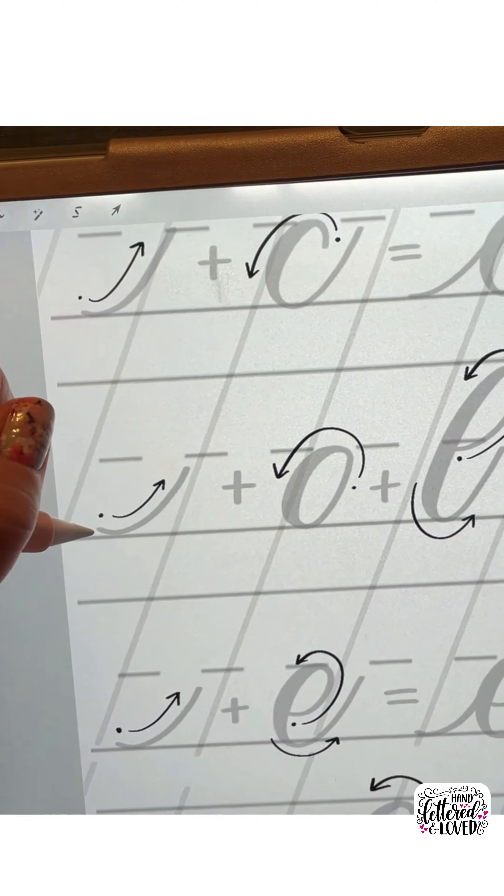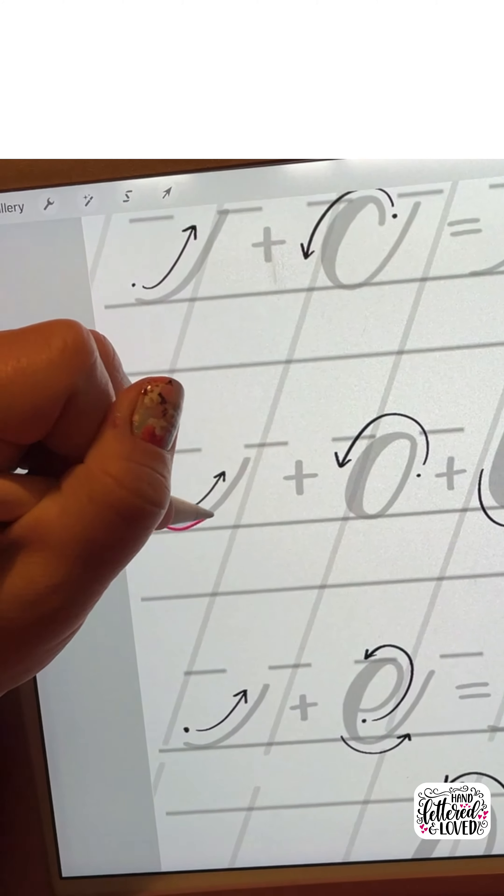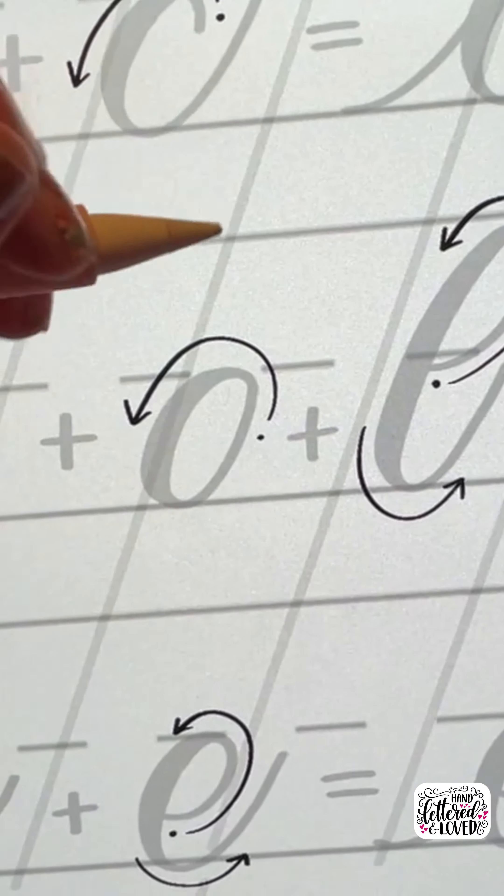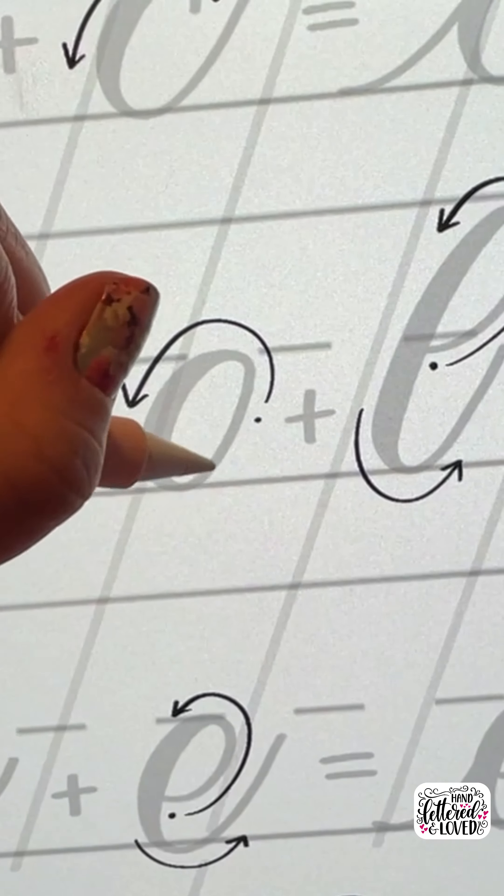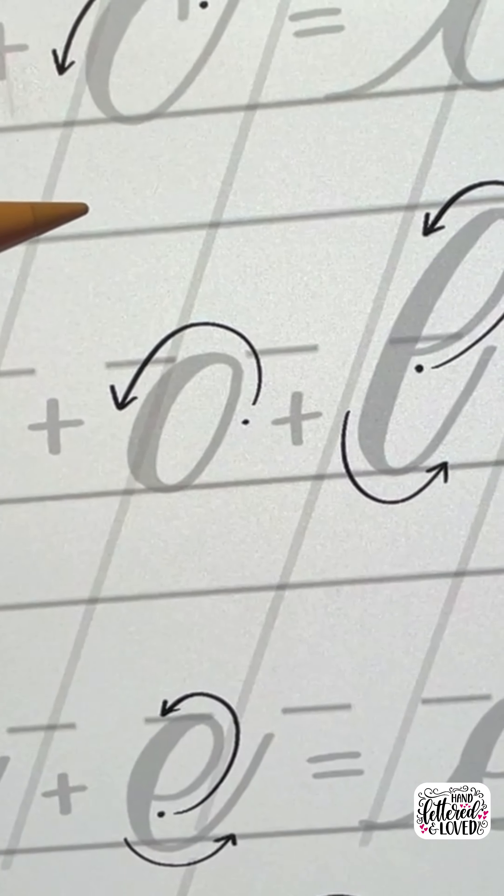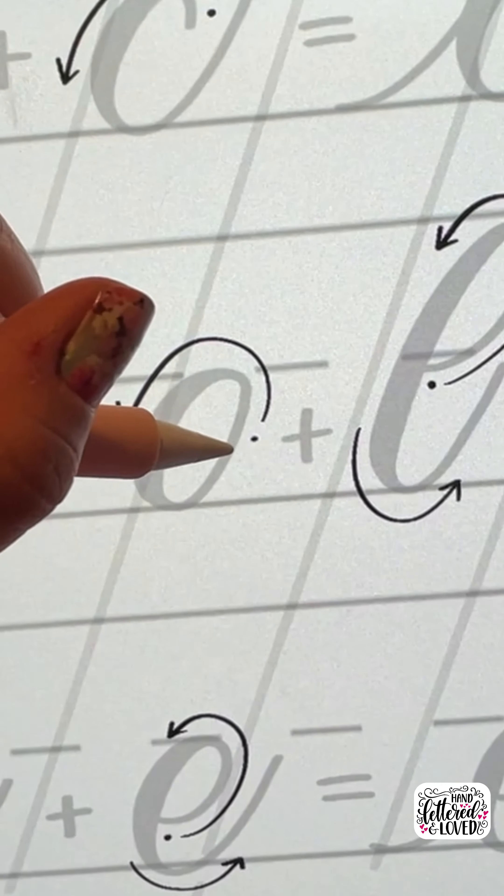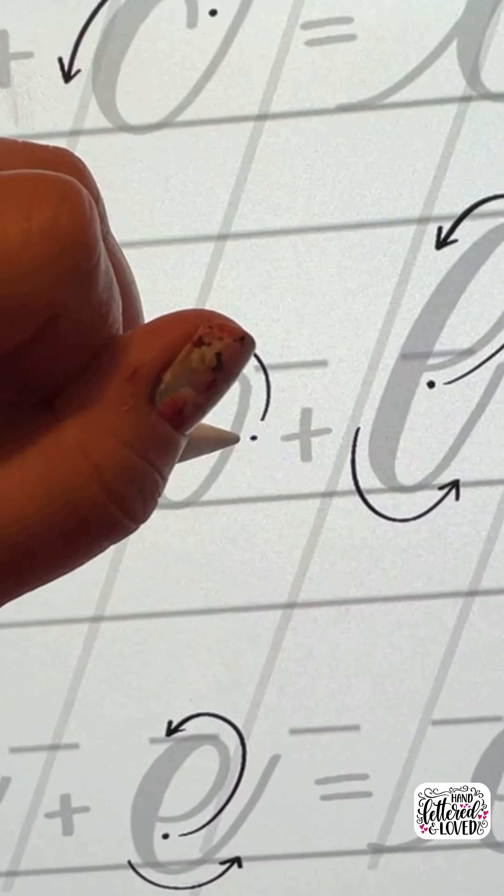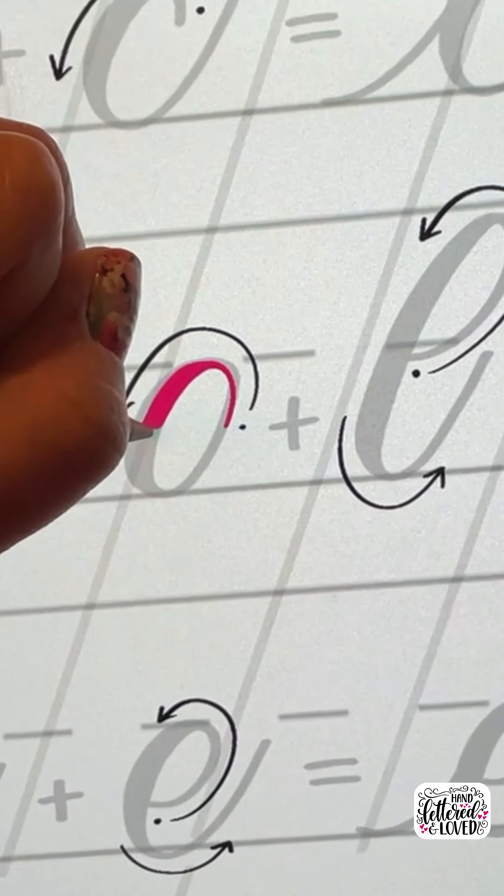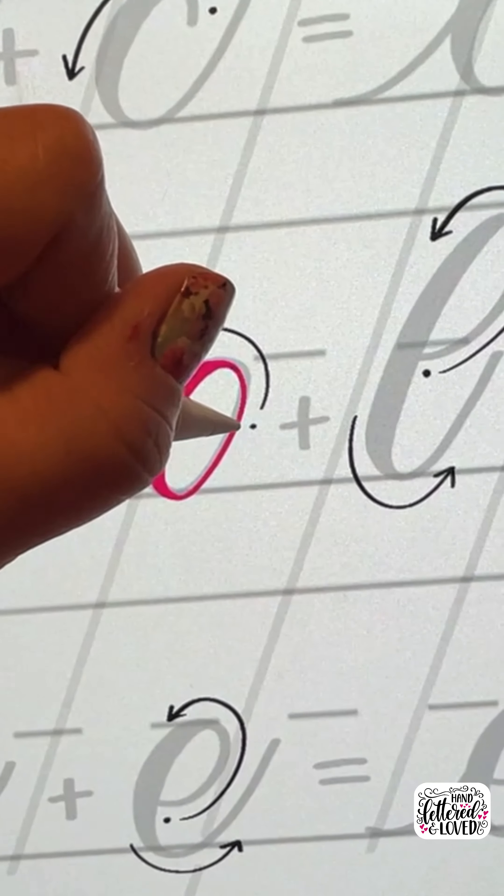You're going to start with an upstroke, a thin line up. Then we're going to do the basic stroke, the oval, and this one is easiest when you start it on the right side. So you're starting with a thin upstroke, and you're going to come around and then transition into your thick and back up to thin.